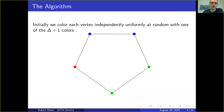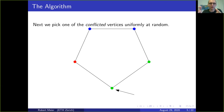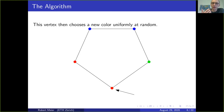Then we color all the vertices which are not happy yet—which have a neighbor with the same color—conflicted. We choose a conflicted vertex uniformly at random, then recolor this chosen vertex with a color chosen uniformly at random. It can happen that we choose a color which immediately creates a conflict again, or we can also choose the same color we had before.